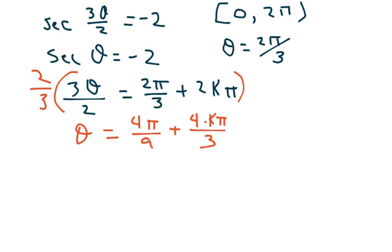Now when k is 0, we get 4 pi over 9. And that clearly is in my domain here. And now we just have to check for others. Let's try k equals 1.